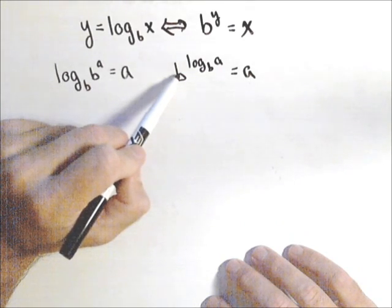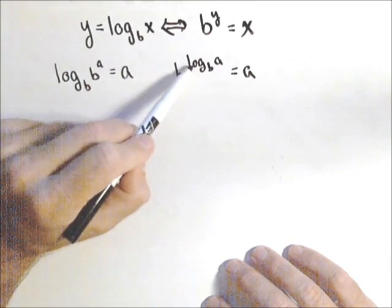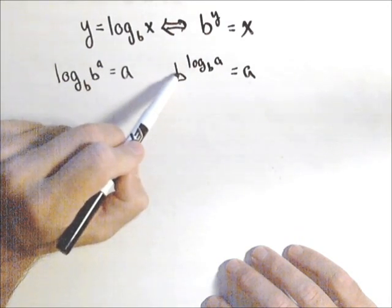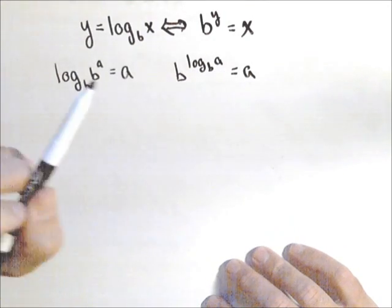Here, we're also composing the two, except now the input is a logarithm. The inside function is a logarithm. The outside function is an exponential. So if we have b raised to the log base b of a, it's equal to a.